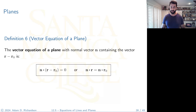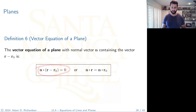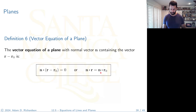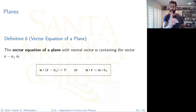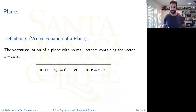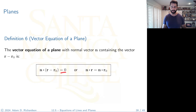The vector equation of a plane with normal vector n containing point r₀ is: n · (r − r₀) = 0, or equivalently n · r = n · r₀. This uniquely describes the plane because the normal vector is orthogonal to every line in the plane. Ponder this for a moment before we get to the scalar form.